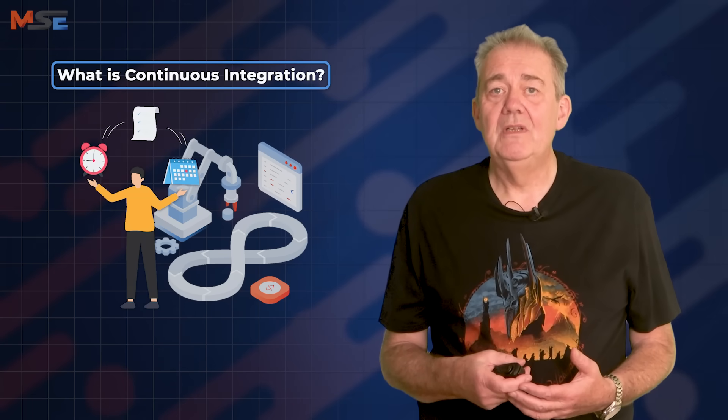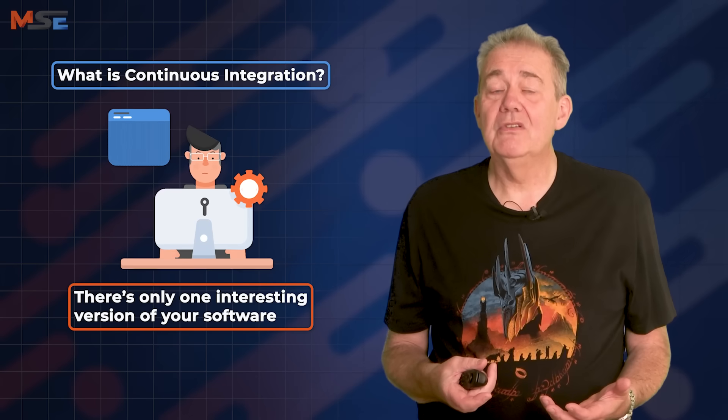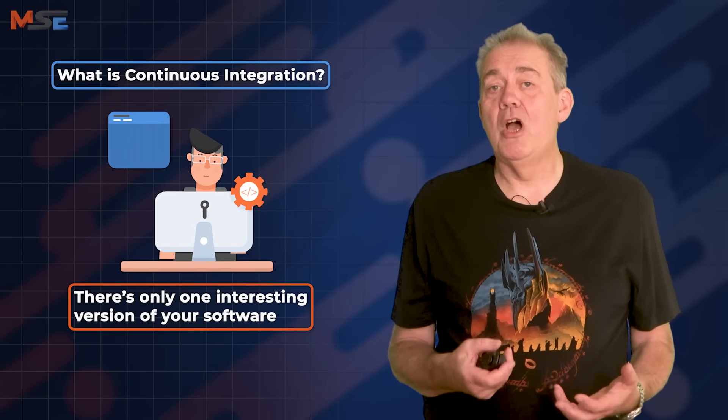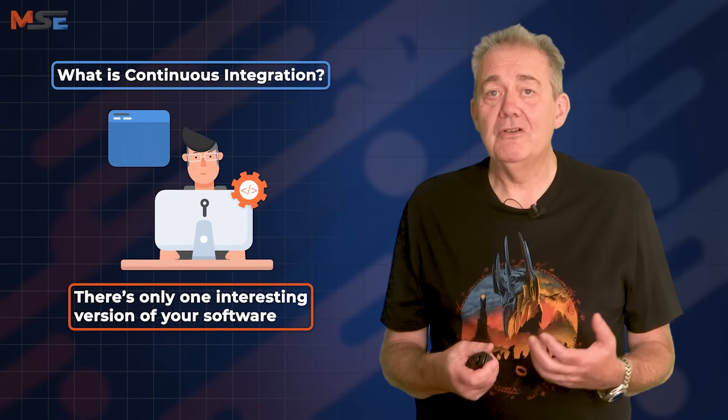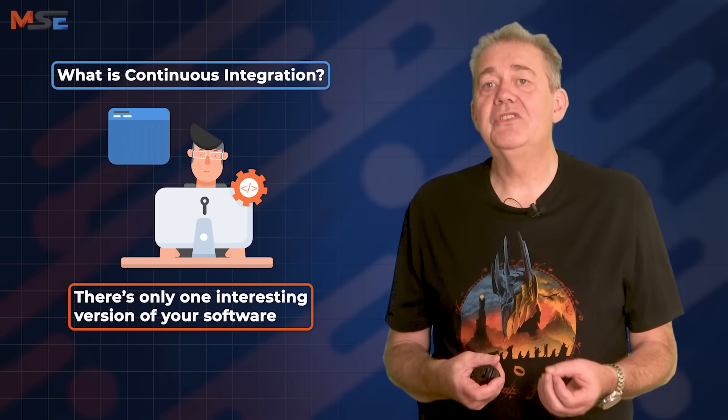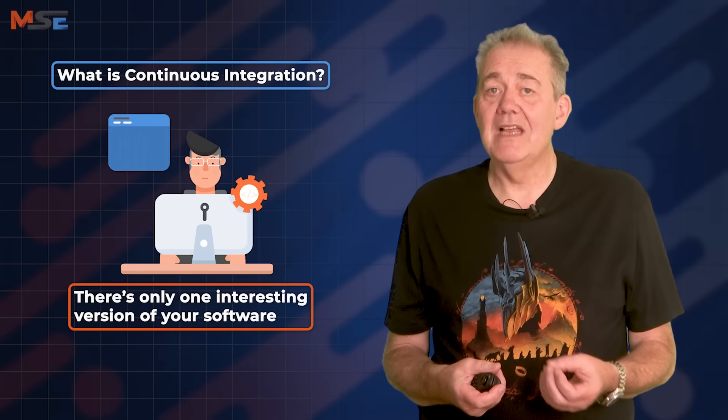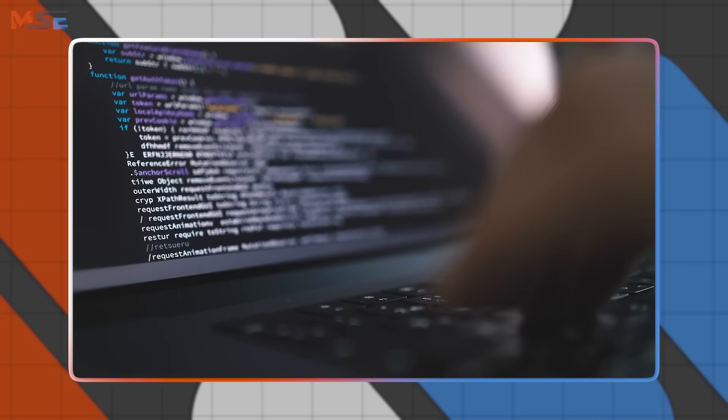The foundational idea of continuous integration is rather simple. There's only one interesting version of your software — only one version of the truth, and that's the current version. So the job of continuous integration is to concretely establish that truth, that current version, as close to continuously as we can sensibly achieve. Team members share their changes with each other frequently to ensure that the versions stay stable and work for everyone.